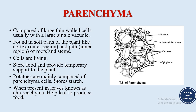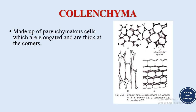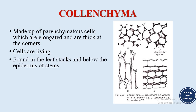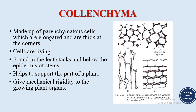When parenchyma cells are present in leaves, they are known as chlorenchyma, and they help the leaf to produce food. Colenchyma is made up of elongated parenchymatous cells which are thick at the corners. These cells are living cells, found in the leaf stalks and below the epidermis of stems. They help support the plant by giving mechanical rigidity to growing plant organs.